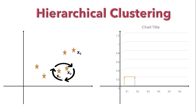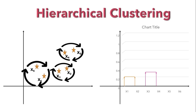Now we will try to find out which are the next nearest clusters. These two are again creating one cluster, named x3 and x4. I will create another dendrogram for these points. Similarly, I will do the same for point 5 and point 6 and draw a dendrogram.